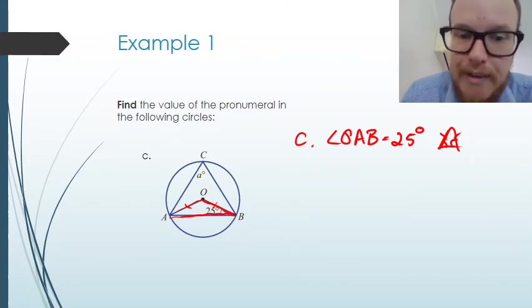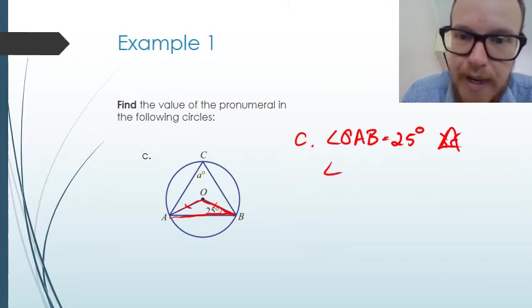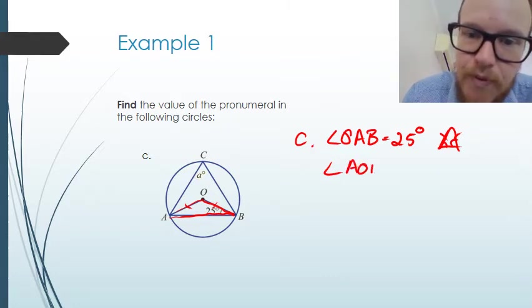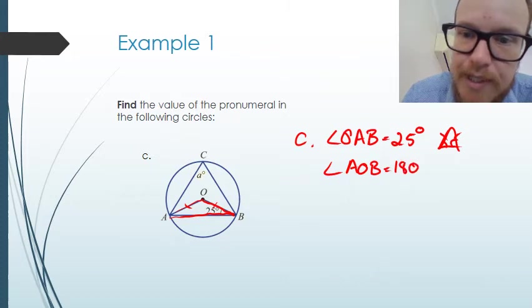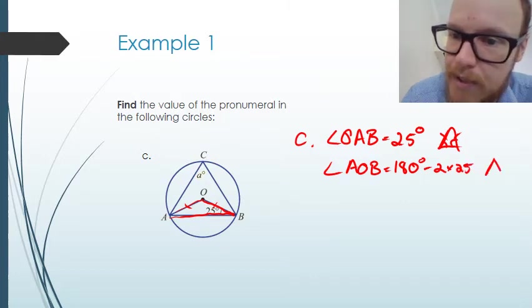We can then work out angle AOB: it equals 180 degrees minus two lots of 25, because there are 180 degrees in a triangle.